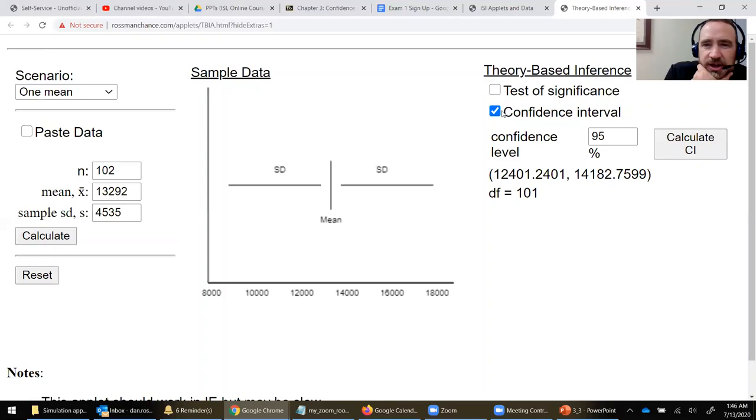There's the 95% confidence interval theory-based. You can see that it's very close to what we had. If I change this to 90 and hit calculate, it'll give me the 90% confidence interval. Let's interpret that quick. I feel 90% confident that the mean price for a Honda Civic amongst all the Honda Civics in the population is somewhere between 12,546 and 14,037.